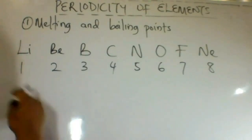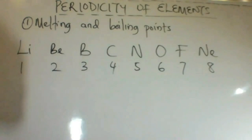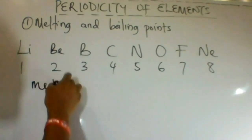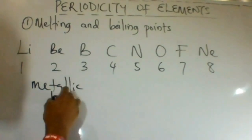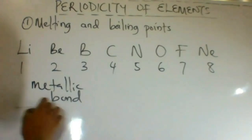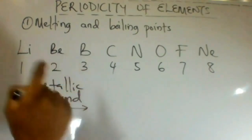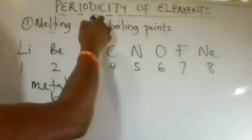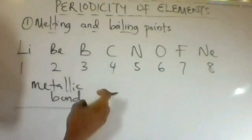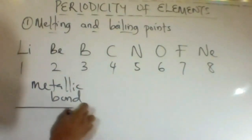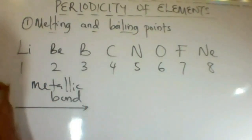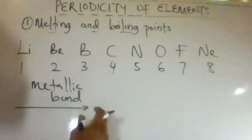Elements in groups 1, 2, and 3 are metals. These elements are held by metallic bonds, and the strength of the metallic bond increases from group 1 to 3. Therefore, the amount of heat energy required to break these metals down increases from left to right. Melting points and boiling points for metals increase from group 1 to group 3.